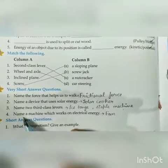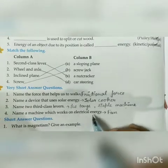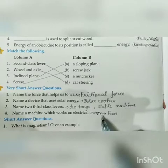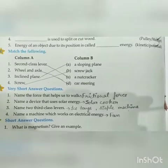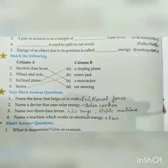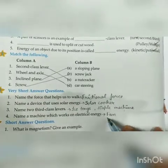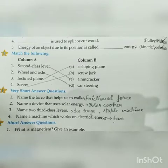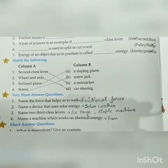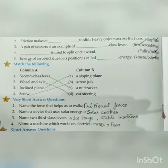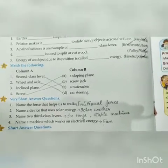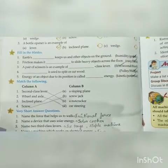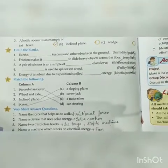Next: name a machine which works on electrical energy. You can write any machine that works on electrical energy. I wrote fan here, but you can write television, computer, and many more. Okay class, this is all about the exercises of chapter number 9. Watch this video carefully and fill your book with the help of this video. Thank you class.